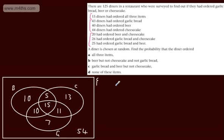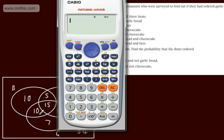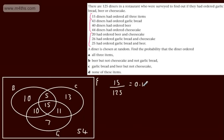So all three items, the probability is going to be 15 over 125. And if you want a decimal answer for that one, if you just do 15 over 125, we will end up now with 0.12.